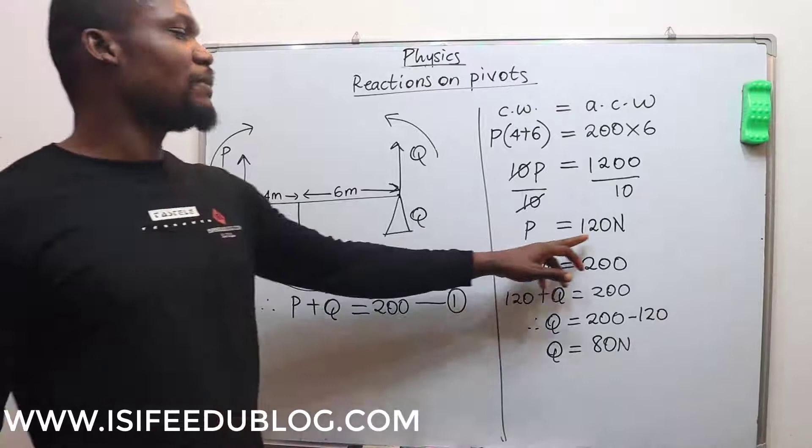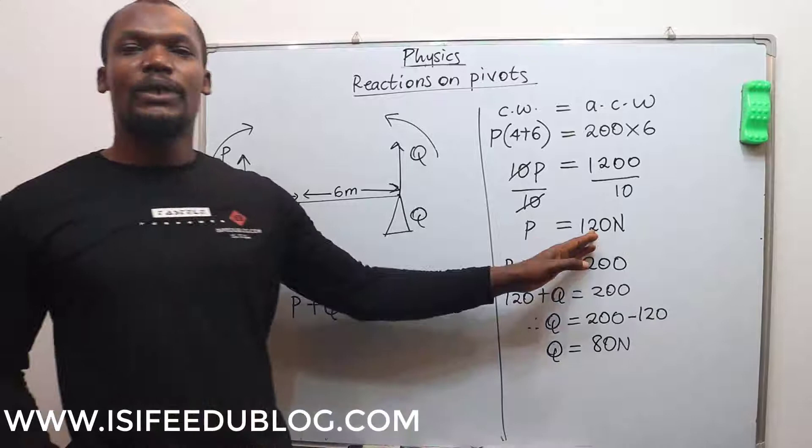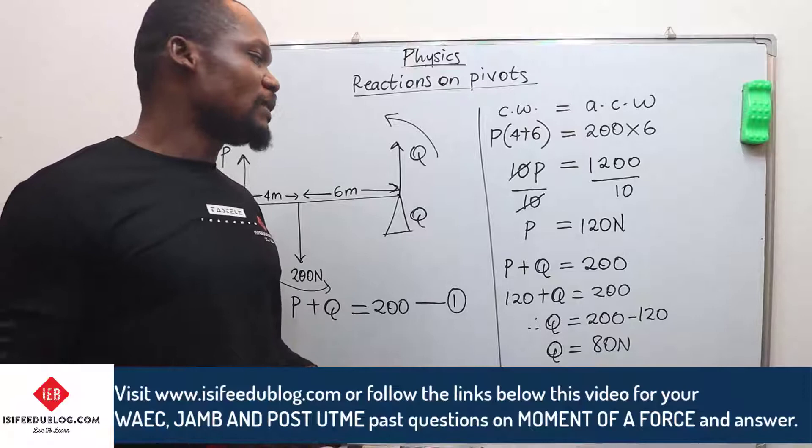That means that for this setup, the reaction at P is 120 newtons and the reaction at Q is 80 newtons. That can be determined by the distances—you can see that this force is closer to P, and hence P has to experience more of the reaction. For more complex problems, check out our exercises and don't forget to check out our past WAEC, JAMB, and Post UTME questions on moment of a force. Thank you.